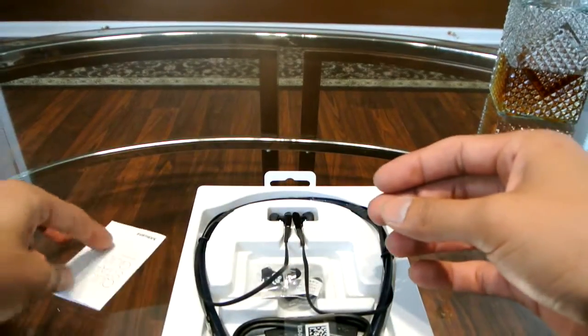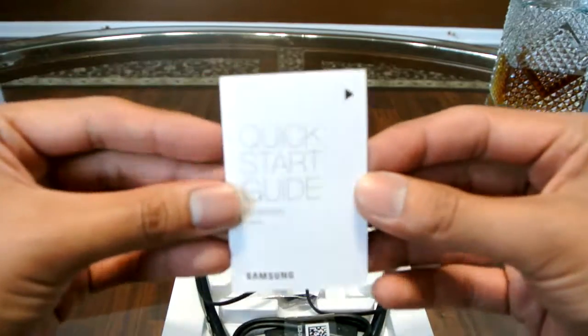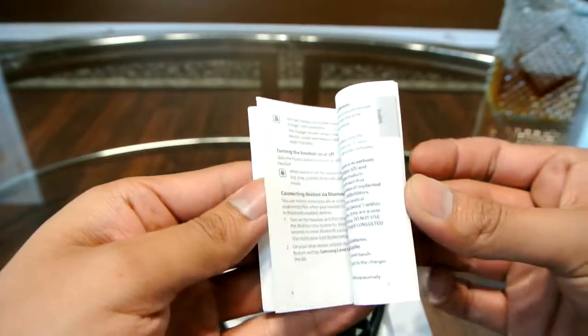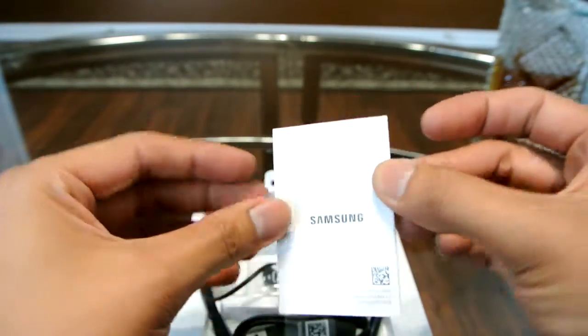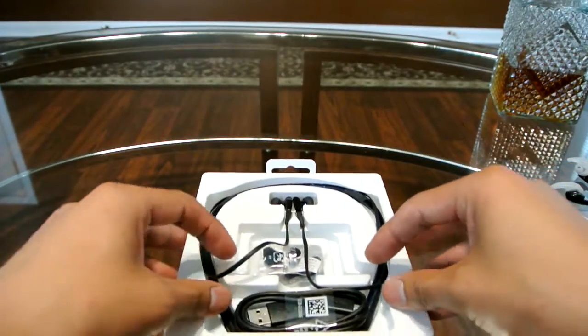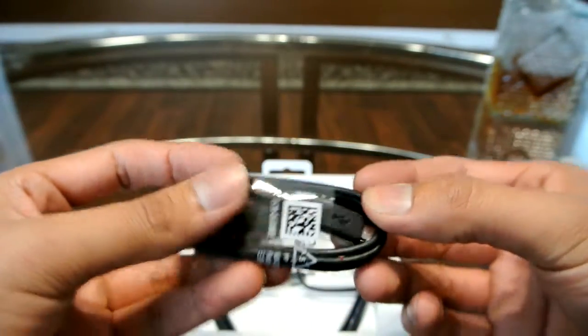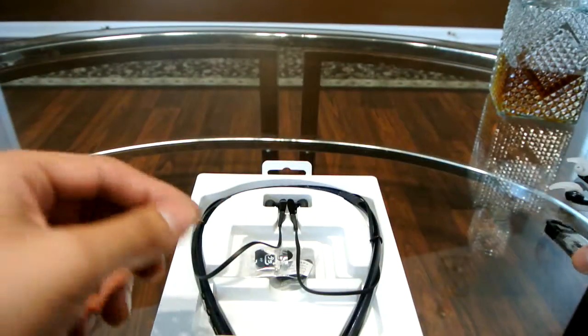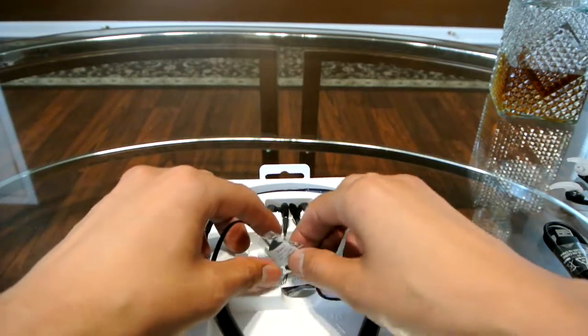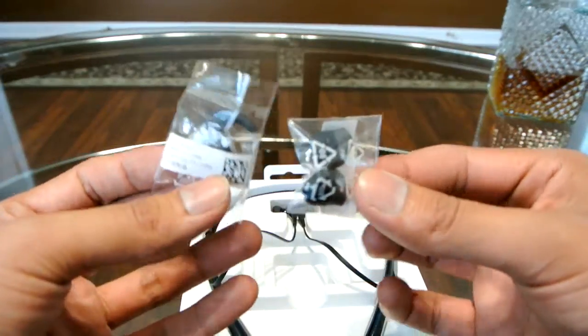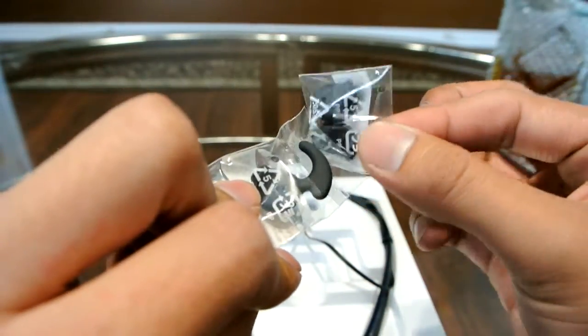Inside it comes with a quick start guide that shows you how to operate the headset. It also includes a charging cable, a micro USB to USB, so standard charging cable for most devices out there. It came with extra sets of earbuds depending on your size.